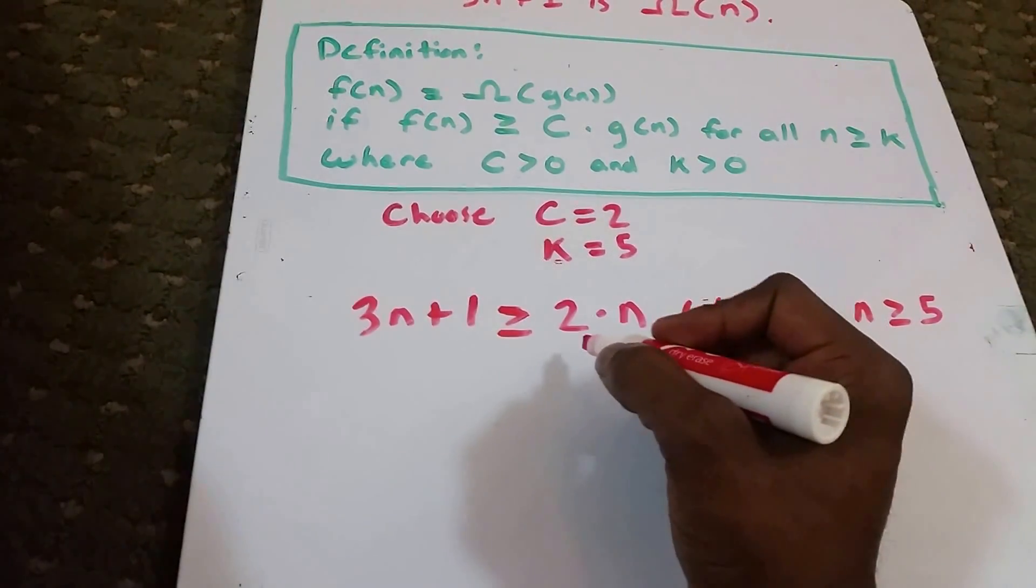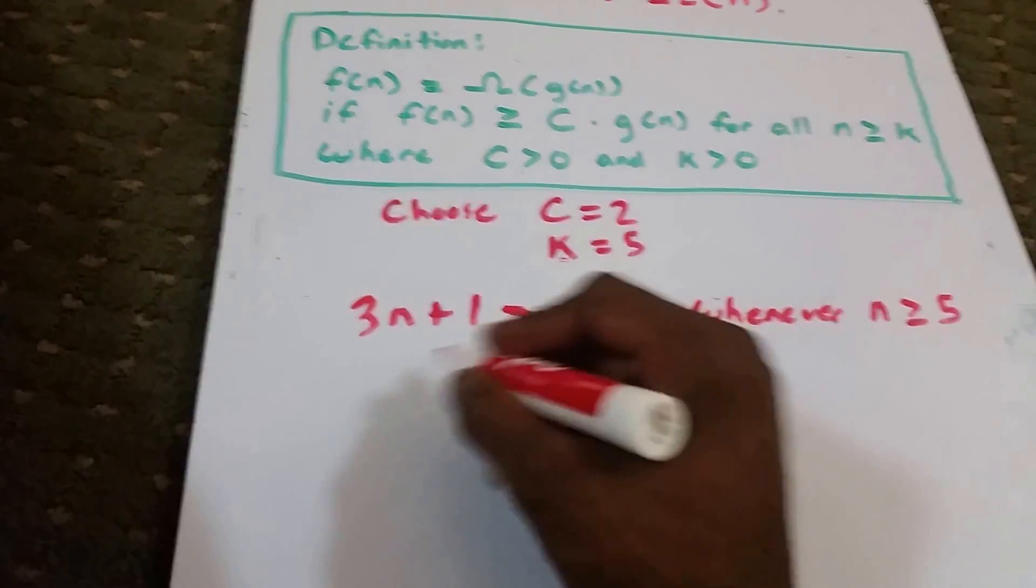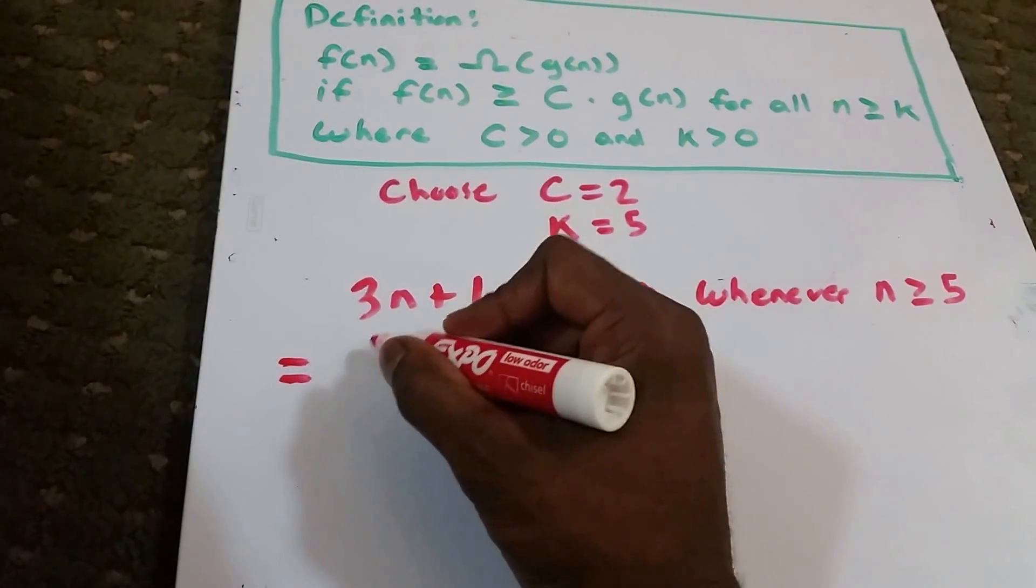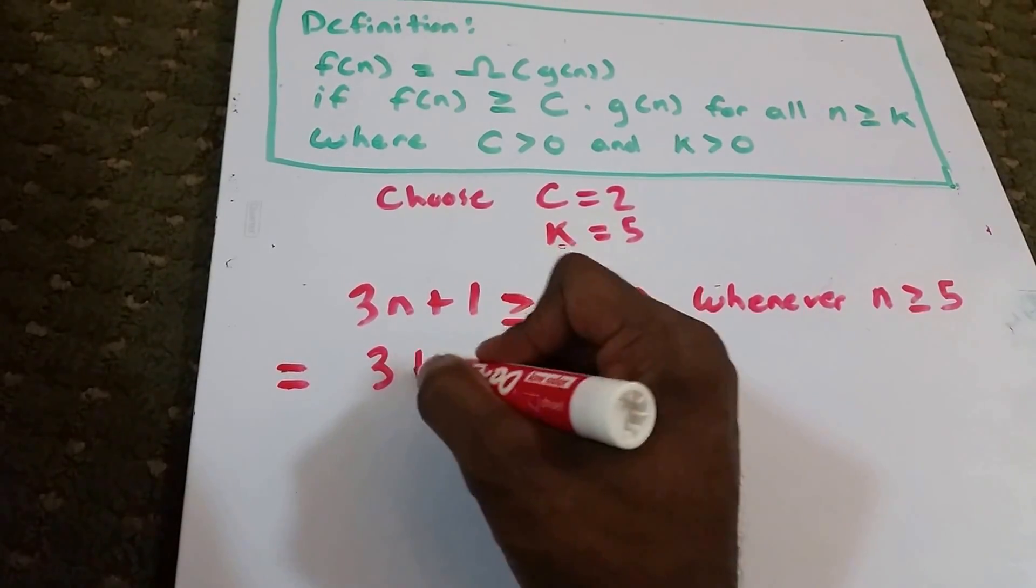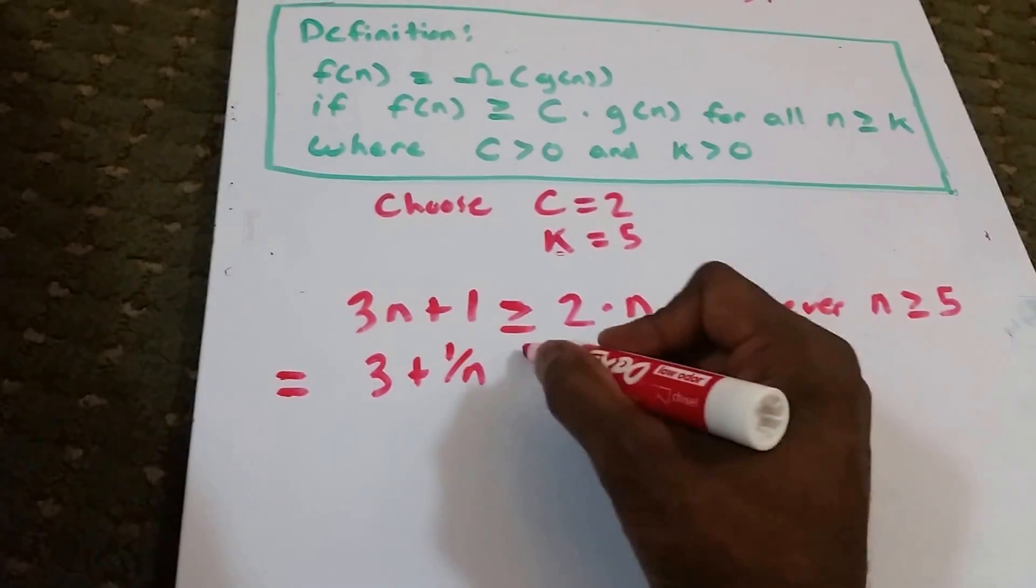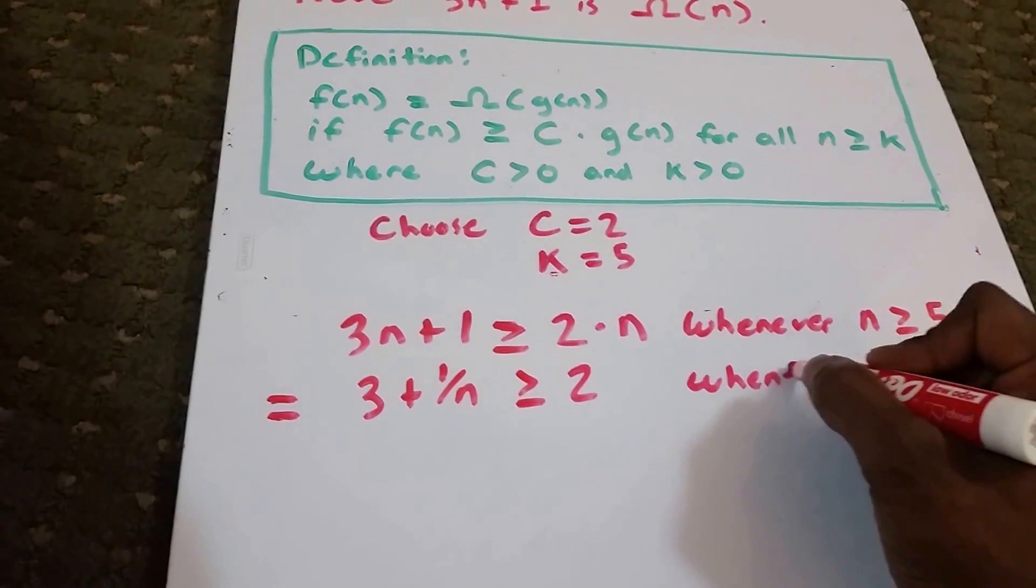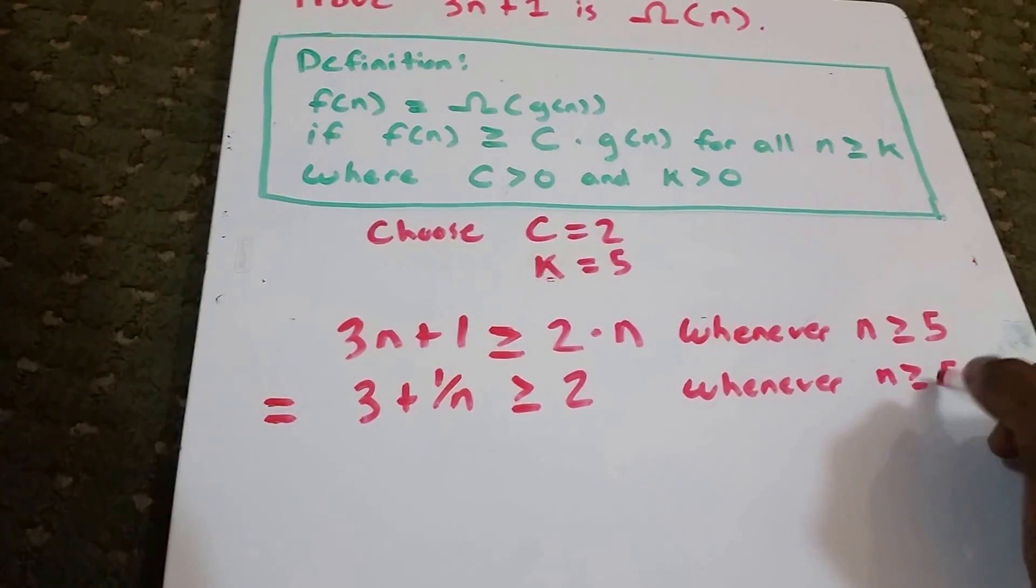What we're going to do is divide both sides by n. So now we're going to get 3 plus 1 divided by n is greater than or equal to 2 whenever n is greater than or equal to 5.